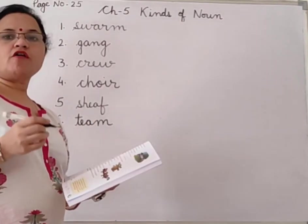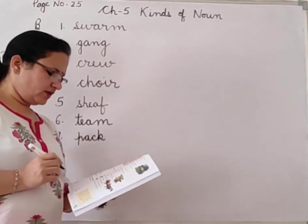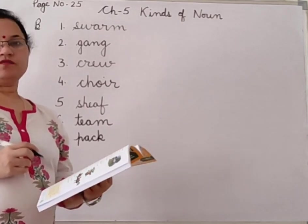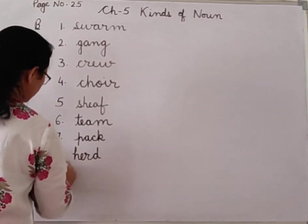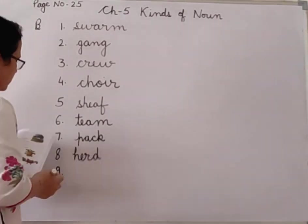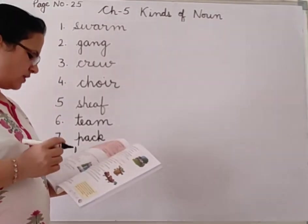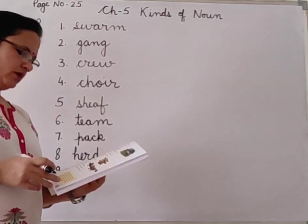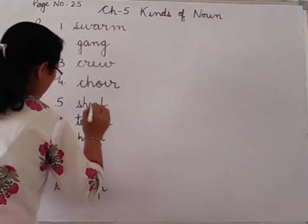Seventh: 'A dash of wolves.' A pack of wolves — the collective noun for wolves is pack. Eighth: 'The dash of buffaloes had blocked the traffic.' The collective noun for buffaloes is herd — the herd of buffaloes blocked the traffic. Ninth: 'My father used a dash of tools.' Set of tools. Tenth: 'A dash of monkeys ate all the bananas from the tree.' The collective noun for monkeys is troop — a troop of monkeys.